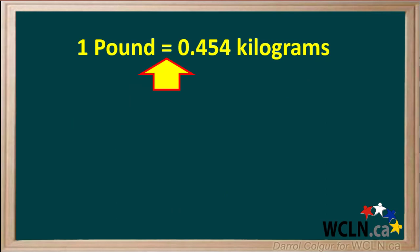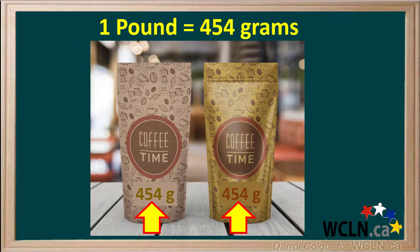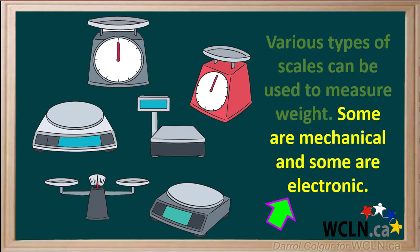One pound of weight is equivalent to 0.454 kilograms, or 454 grams in mass, since one kilogram equals a thousand grams. You may have noticed in grocery stores that many items, such as coffee, are sold in packages showing a mass of 454 grams. Products like this likely originate in the US, where the imperial pound is used, and one pound imperial is equivalent to 454 grams in metric. Various types of scales — both mechanical and electronic — can be used to measure the force of gravity, or weight.